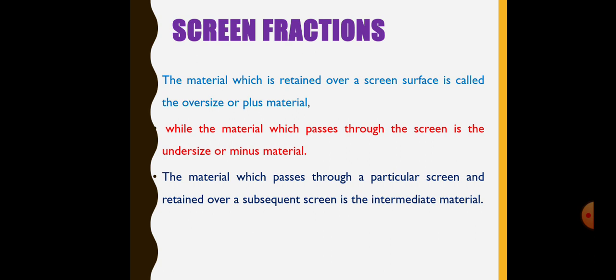Also, the material which passes through a particular screen and retained over a subsequent screen is the intermediate material. The case number third arises when a number of screens are used in a single or in one machine.